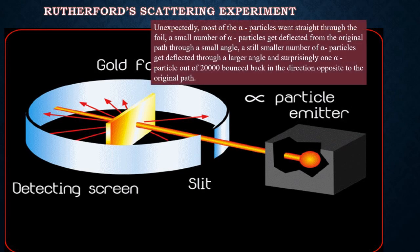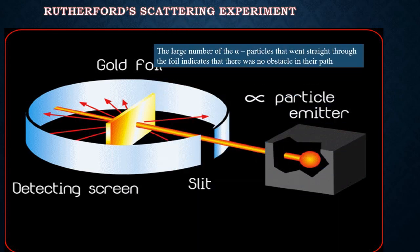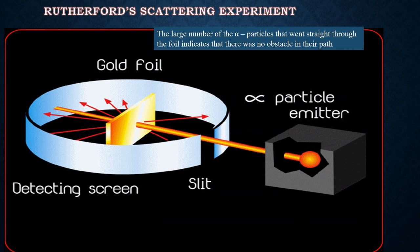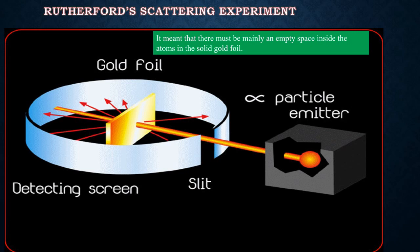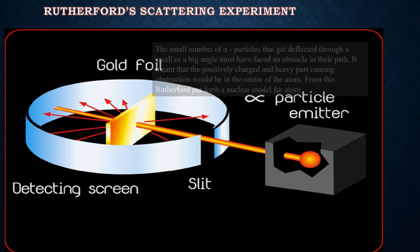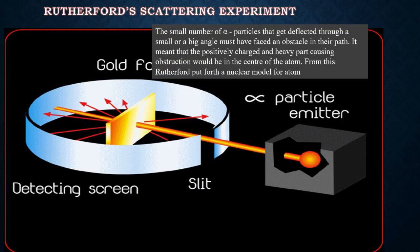Unexpectedly, most of the alpha particles went straight through the foil. A small number of alpha particles were deflected from the original path through a small angle. A still smaller number were deflected through a large angle, and surprisingly, one alpha particle out of 20,000 bounced back in the direction opposite to the original path. The large number going straight through indicates mainly empty space inside the atom. The small number deflected through small or large angles must have faced an obstacle, meaning the positively charged and heavy part causing obstruction would be in the center of the atom.